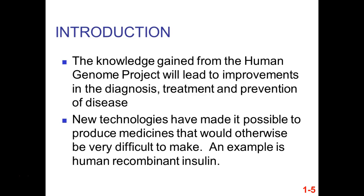We've used this information and developed new technologies to produce medicines that otherwise we wouldn't have been able to. Human insulin, for example, is not actually made by humans — it can be made by E. coli. We stuck the DNA information from humans into bacteria and got them to make the protein for us, so we can give it to people who can't produce it themselves. In the past, insulin was sourced from pigs.